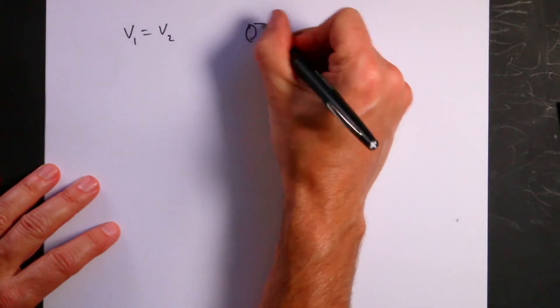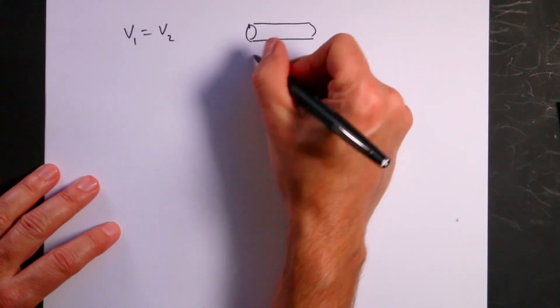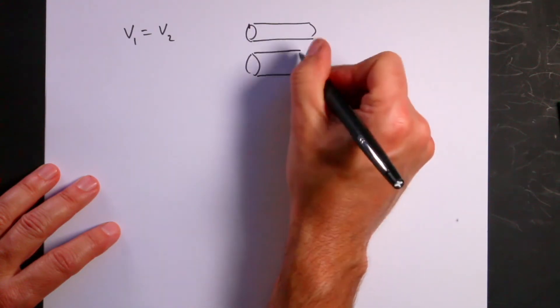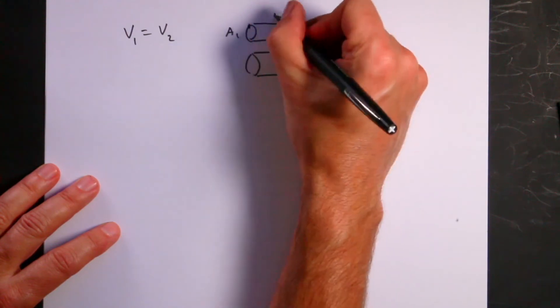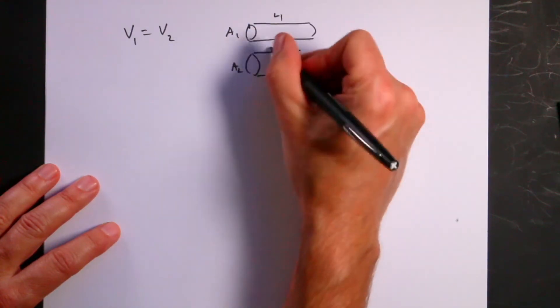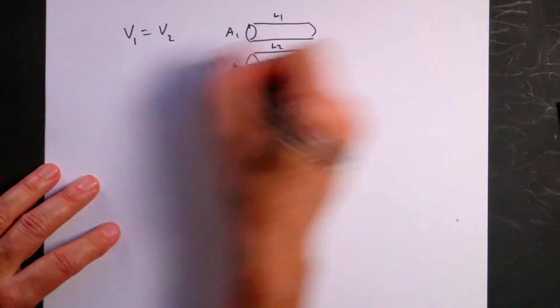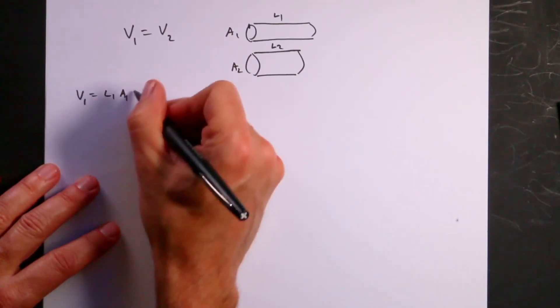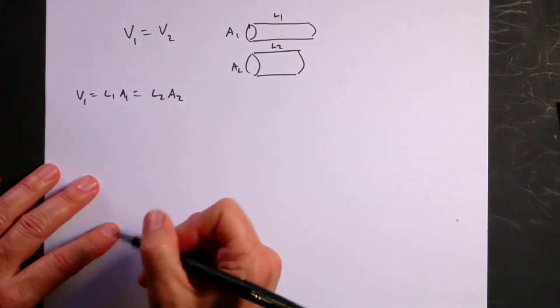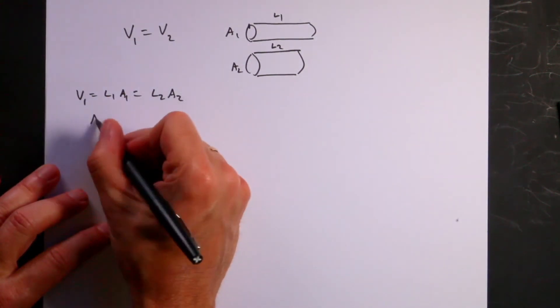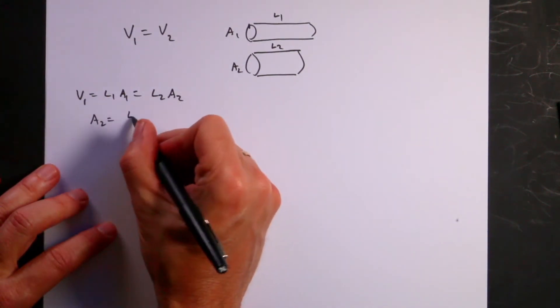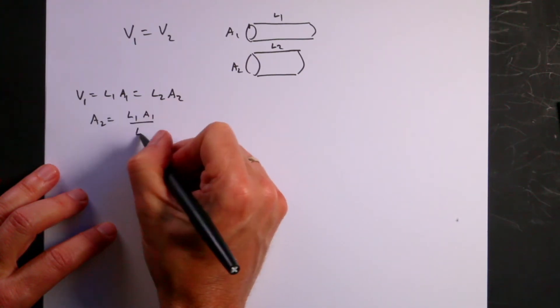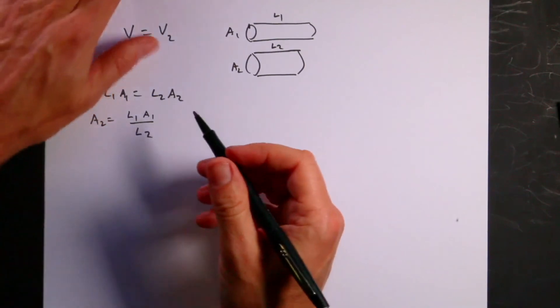Here's my two resistors. Clearly it's going to have to be shorter and wider. This is going to be A1, L1, A2, L2. What's the volume of this? V1 is going to be L1 A1. And that's going to be equal to L2 A2. So let's solve this for A2. A2 is going to be equal to L1 A1 over L2.